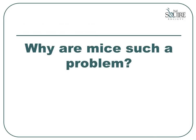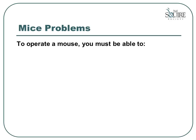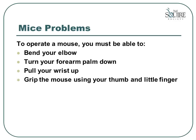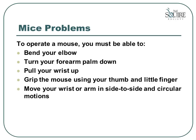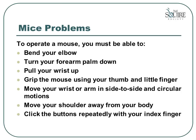The first topic we are going to cover is why mice are such a problem. Our mousing problems arise from the resulting position that is required to operate a mouse. First, you must be able to bend your elbow. Then you must be able to turn your forearm so that your palm is facing down. Next, you must be able to pull your wrist up. You also have to be able to grip the mouse using your thumb and little finger and move your wrist or arm in a side-to-side and circular motion. And finally, you must be able to click the mouse buttons repeatedly with your index finger.